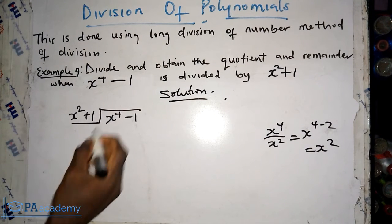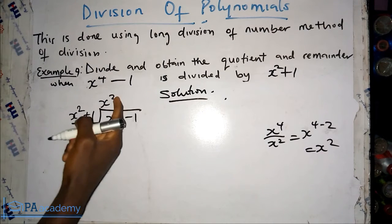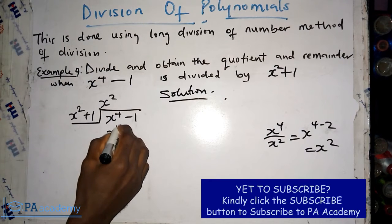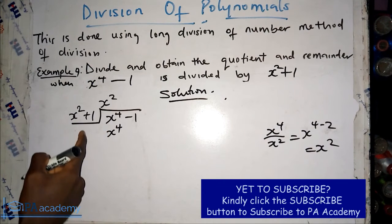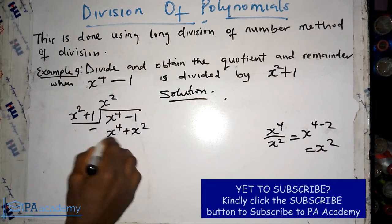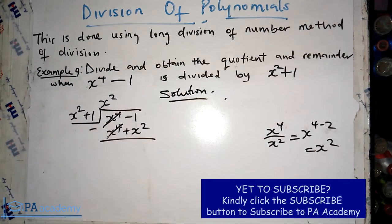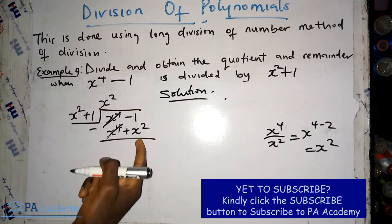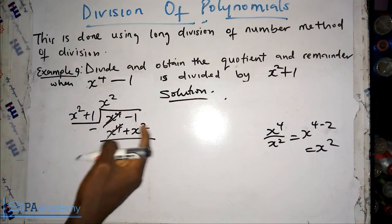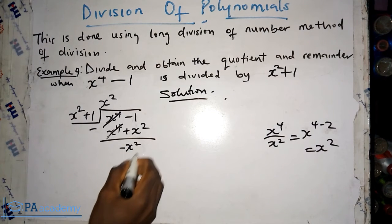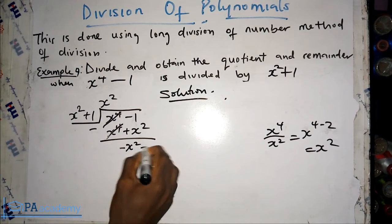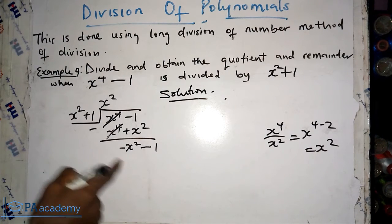So x⁴ divided by x² gives us x². We use x² to multiply the divisor: x² multiplied by x² gives x⁴, and x² multiplied by 1 gives plus x². Now let's subtract — x⁴ minus x⁴ cancels to zero, and we're left with minus plus x², giving minus x². The constant minus 1 remains as minus 1.